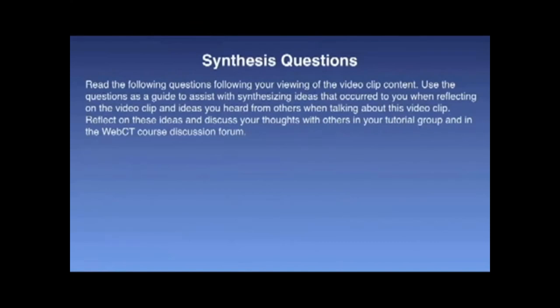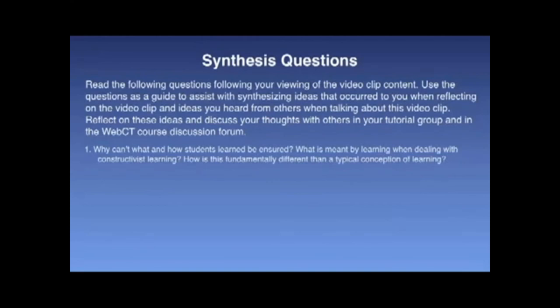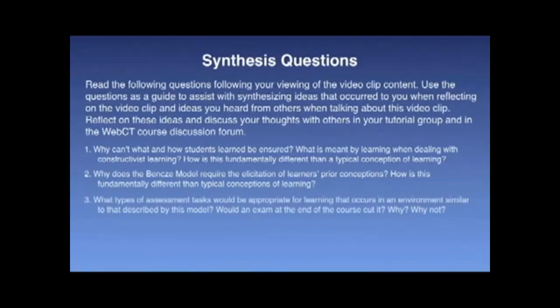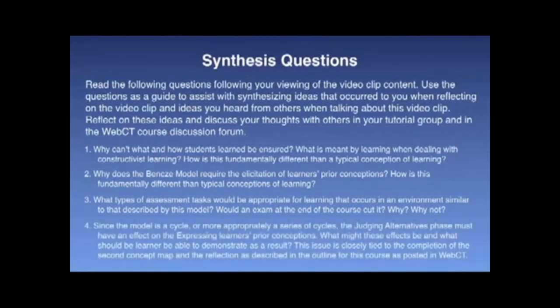And finally, the synthesis questions for this video clip are as follows. Number one, why can't what and how students learned be ensured? What is meant by learning when dealing with constructivist learning? And how is this fundamentally different than a typical conception of learning? Number two, why does the Bends model require the elicitation of learners' prior conceptions? How is this fundamentally different than typical conceptions of learning? And number three, what types of assessment tasks would be appropriate for learning that occurs in an environment similar to that described by this model? Would an exam at the end of the course cut it? Why or why not? And fourthly, since the model is a cycle, or more appropriately, a series of cycles, the judging alternatives phase must have an effect on the expressing learners' prior conceptions. What might these effects be? And what should the learner be able to demonstrate as a result? This issue is closely tied to the completion of the second concept map and the reflection activity, as described in the outline for this course, posted in WebCT. What might you see here?